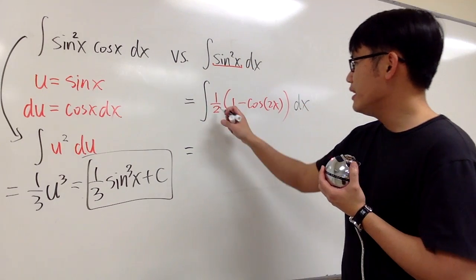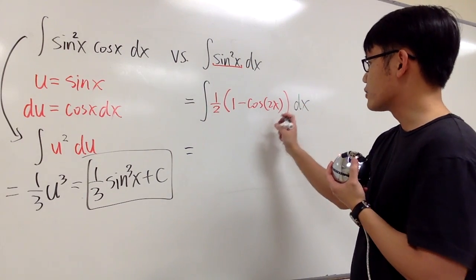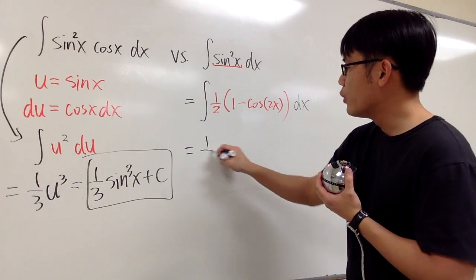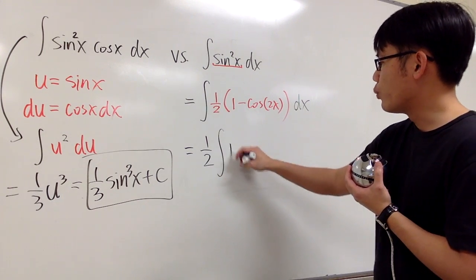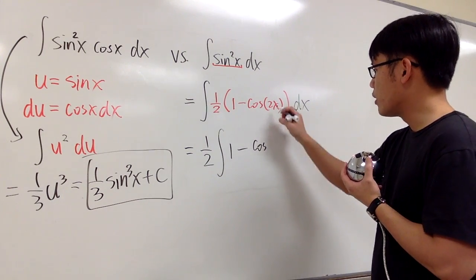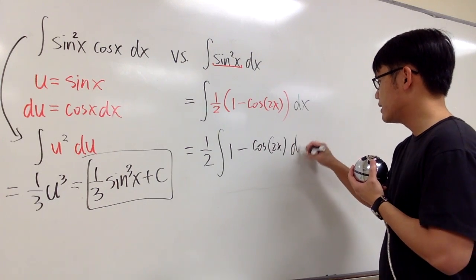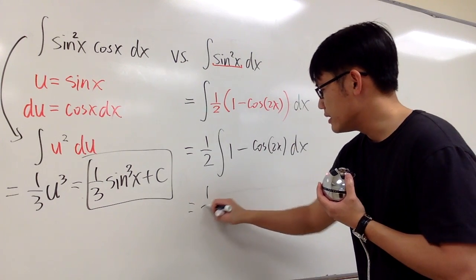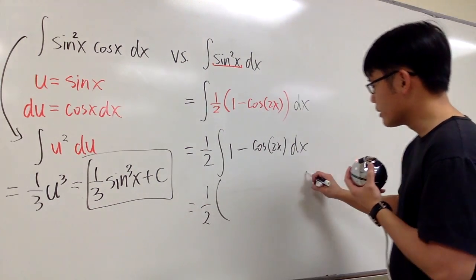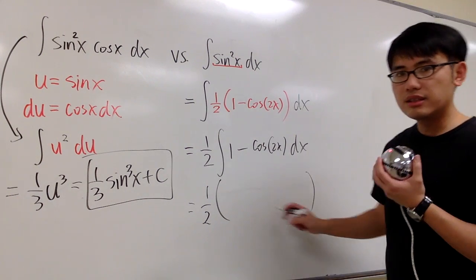So we finish this up. This right here is just a constant multiple of this function. So we can take this outside. 1 half integral of 1 minus cosine of 2x dx. And then let's see. Put down the 1 half and then put down the parentheses. And let's put down the answer inside the parentheses.